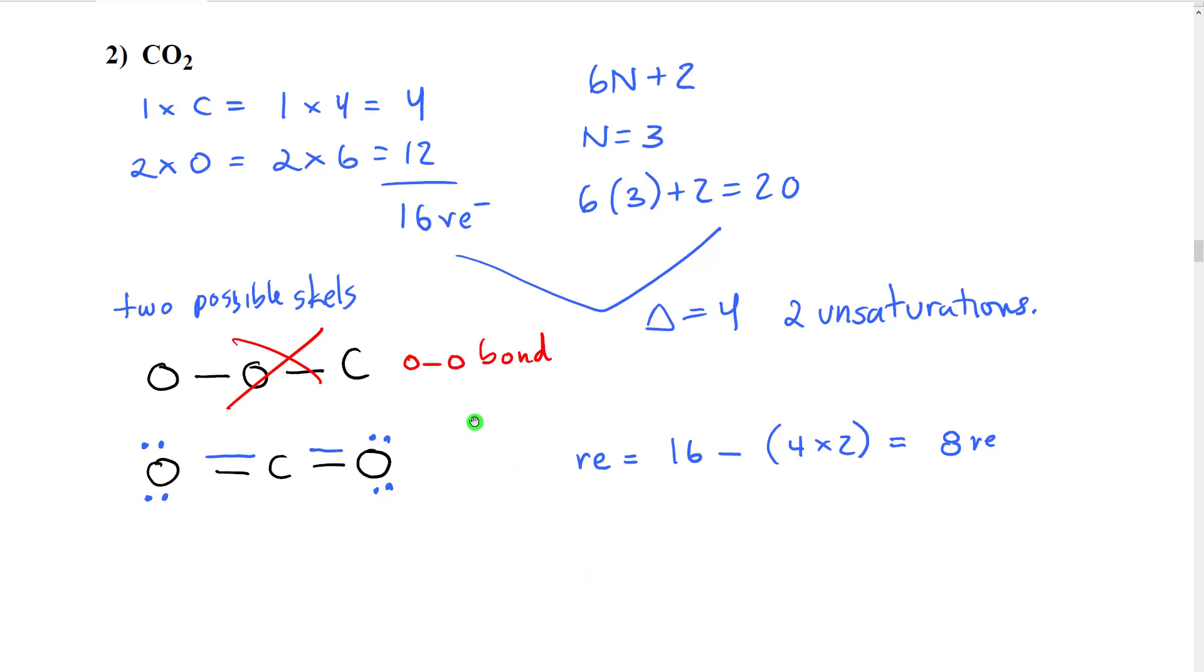If we look, there are two possible skeletons here. One would look like this: oxygen, then oxygen, then carbon. The other one would look like this: oxygen, then carbon, then oxygen. We're going to cross this top skeleton out because in this skeleton, we have an oxygen to oxygen bond. That is generally less desired. And we would not expect to see a molecule with this skeletal structure. So therefore, we're going to work off of this one.